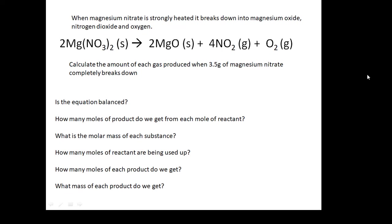Here's another one. When magnesium nitrate is strongly heated, it breaks down into magnesium oxide, nitrogen dioxide, and oxygen. Magnesium nitrate is a solid, and it goes to magnesium oxide (solid), NO₂ nitrogen dioxide (gas), and oxygen (gas). Calculate the amount of each gas produced when 3.5 grams of magnesium nitrate completely breaks down.